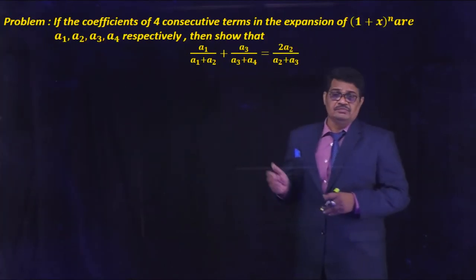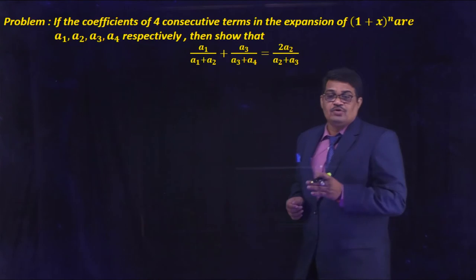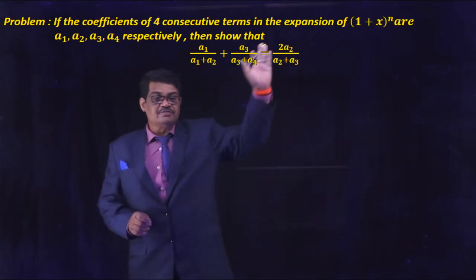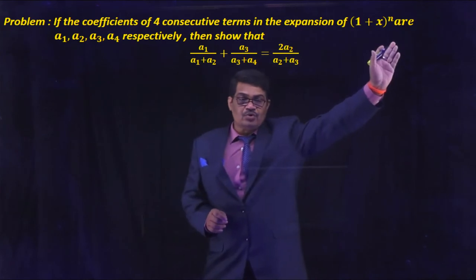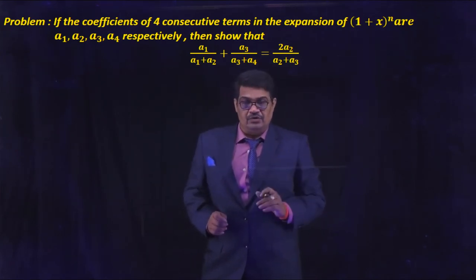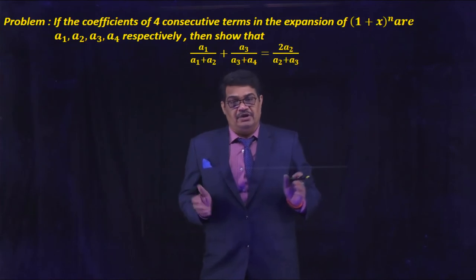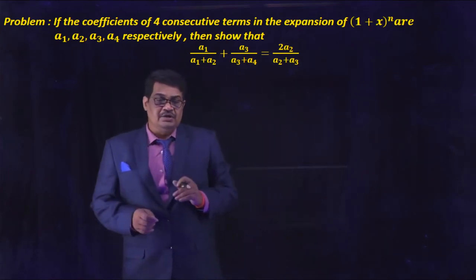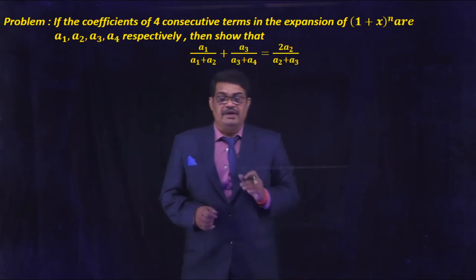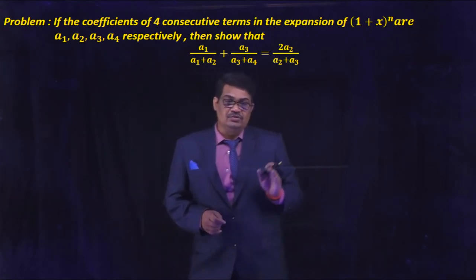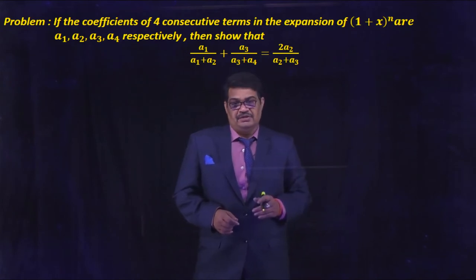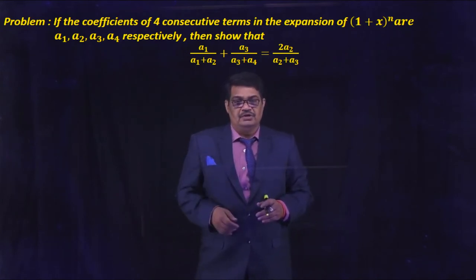See the next problem. If the coefficients of 4 consecutive terms in the expansion of (1+x)^n are a1, a2, a3, a4 respectively, then show that a1/(a1+a2) + a3/(a3+a4) = 2a2/(a2+a3).